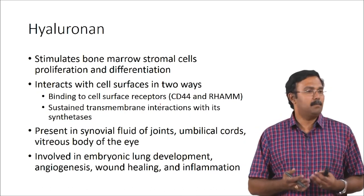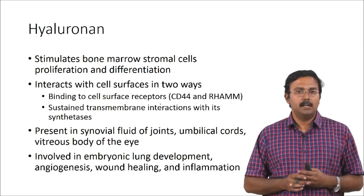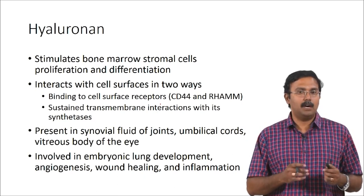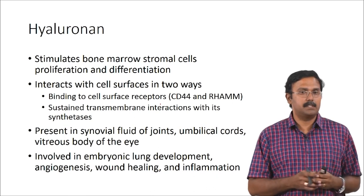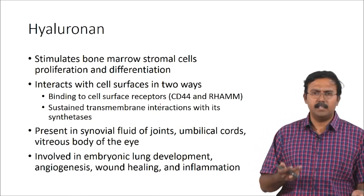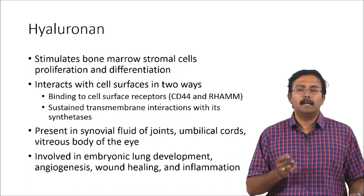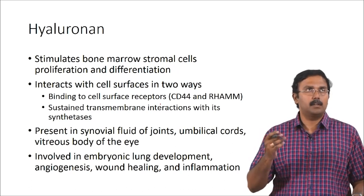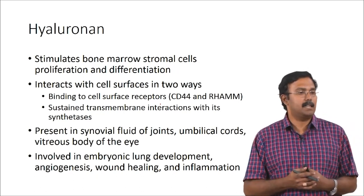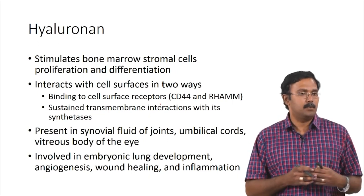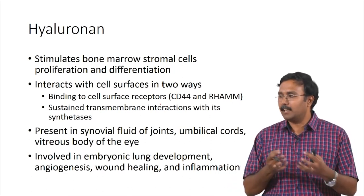People have shown that hyaluronon has very desirable bioactivities. It can stimulate bone marrow stromal cell proliferation and differentiation. It also interacts with cell surfaces in two ways: by binding through surface receptors CD44 and RHAM (receptor for hyaluronic acid-mediated motility), and through sustained transmembrane interactions with its synthetases. Because of these things it can actually interact very nicely with cells and help the cells to attach to the surface.